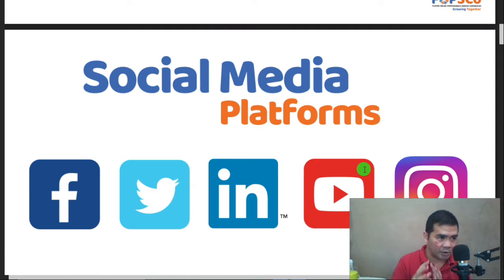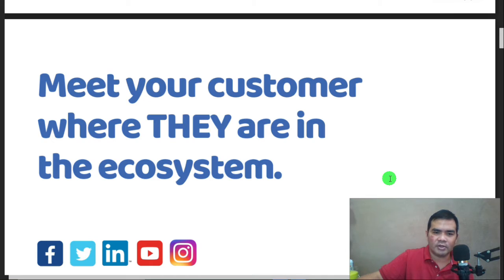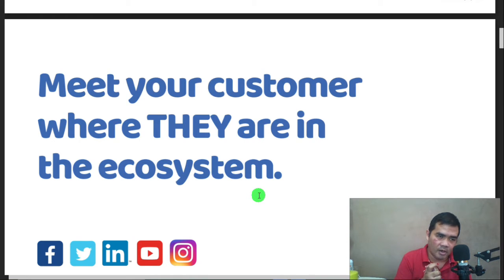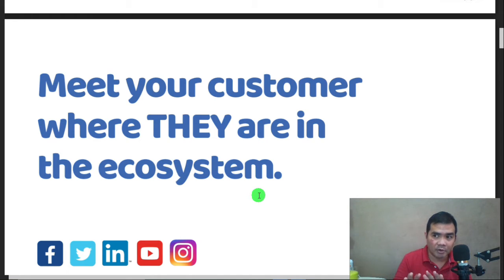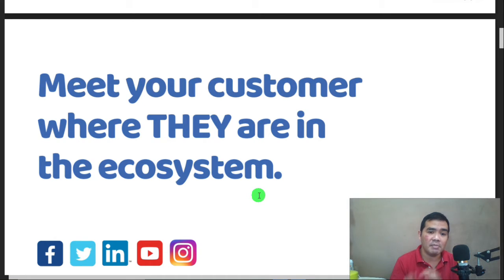These are the social media platforms that are our priority in this module — the ones most visited by your audience and where they mostly have accounts. Meet your customers where they are in the ecosystem. You should identify or research where your target customers mostly are, and prioritize those platforms. For example, if your research shows your audience is mostly on Instagram, focus there — but that doesn't mean you won't also create presence on other platforms.